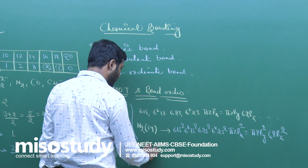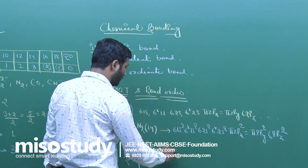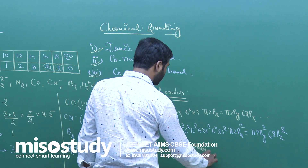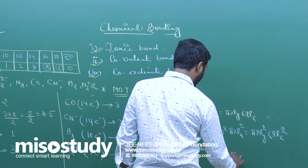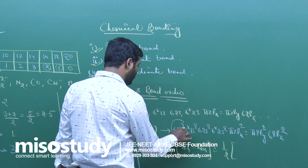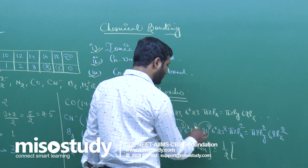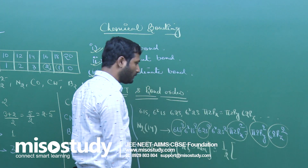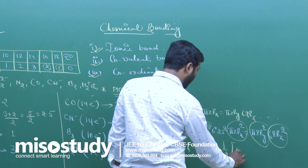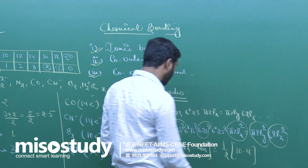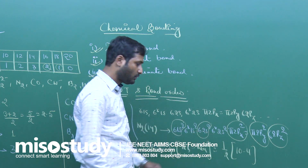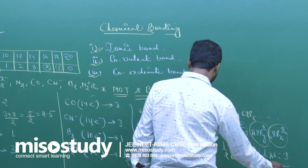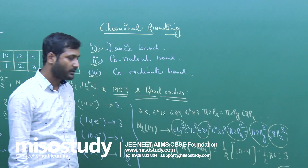By using this, how to find the bond order? Bond order = ½ × (number of bonding electrons − number of anti-bonding electrons). Bonding electrons: 2 + 2 + 2 + 2 + 2 = 10. Anti-bonding electrons: σ*1s² + σ*2s² = 4. So bond order = ½ × (10 − 4) = ½ × 6 = 3. The bond order of N2 is 3.